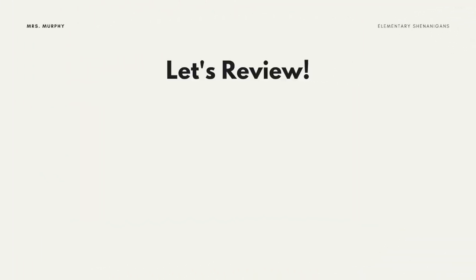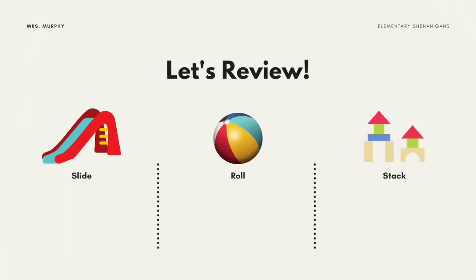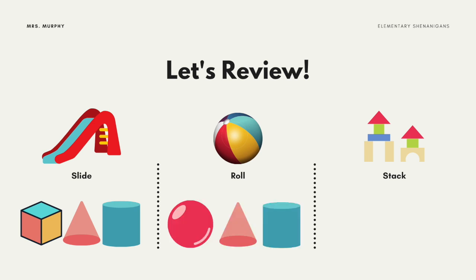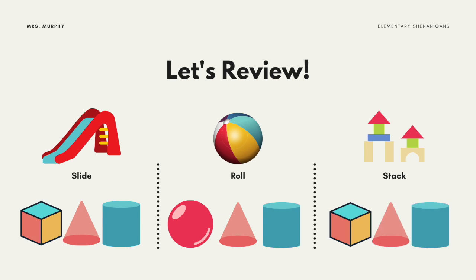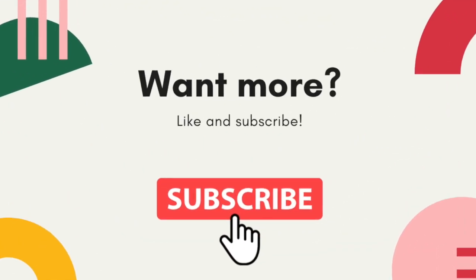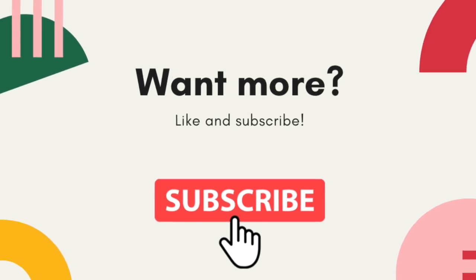Let's review what we learned in our investigations. We learned that shapes can slide, roll, or stack. The shapes that can slide are the cube, cone, and cylinder. The shapes that can roll are the sphere, cone, and cylinder. The shapes that can stack are the cube, cone, and cylinder. That's all for today!